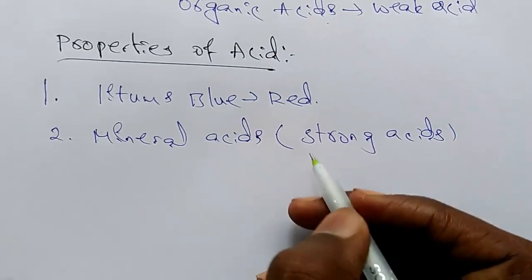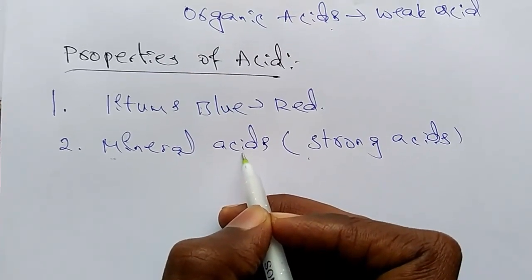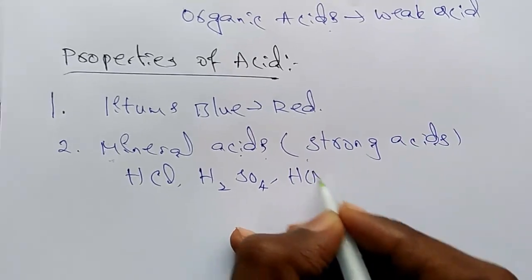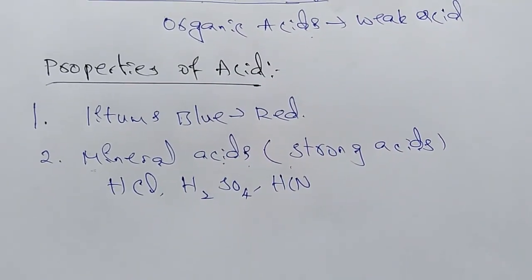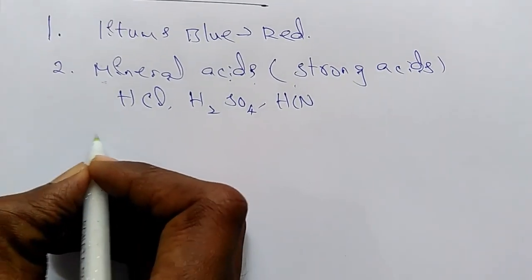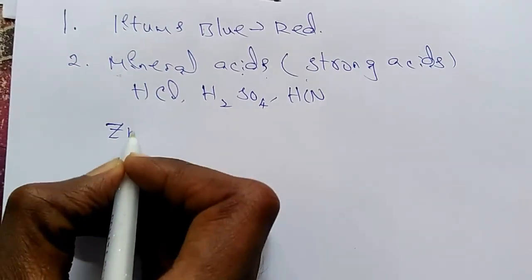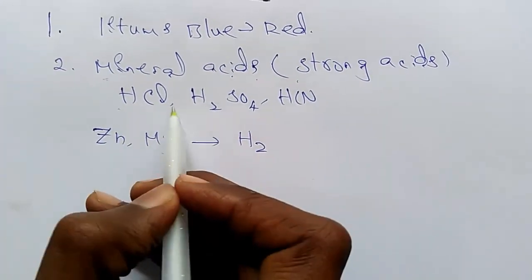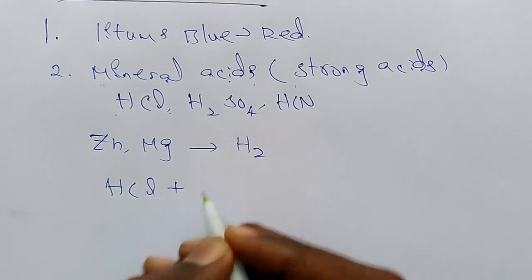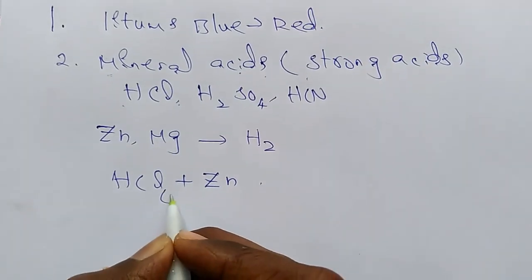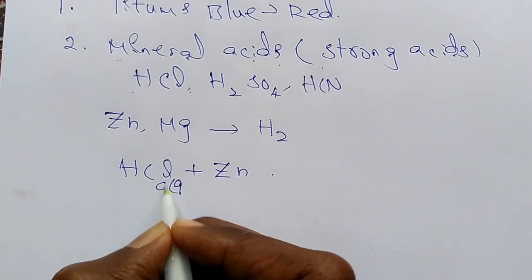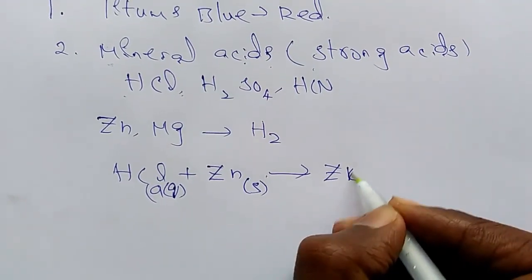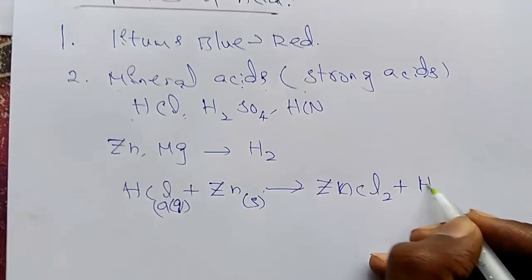Mineral acids — we choose the acidity strength and strong acids. Strong acids include HCl, H2SO4, and HNO3. We choose the acidity concentration. Next point is that mineral acids react with metals like zinc and magnesium to liberate hydrogen gas.